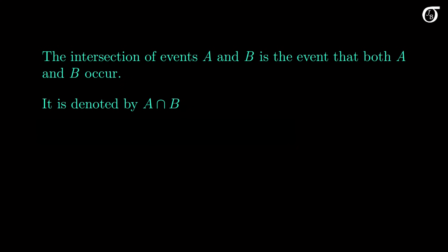We are free to switch the ordering of the intersection of events. B intersect A, or B and A, is the same event as A intersect B, or A and B.